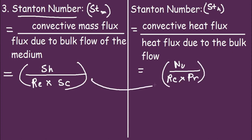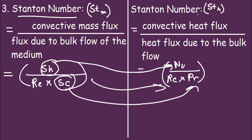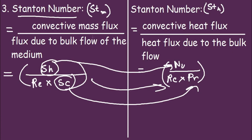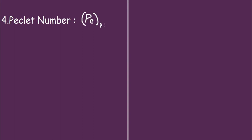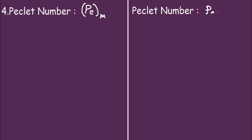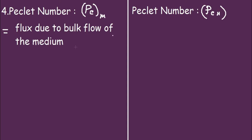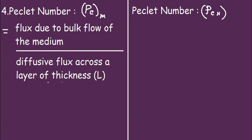If you remember one of these, deriving the other is easy: the analog to Sherwood number is Nusselt number, and the analog to Schmidt number is Prandtl number. The fourth group is the Peclet number. For mass transfer, denoted Pe_m, it equals flux due to bulk flow divided by diffusive flux across a layer of thickness L, which equals Reynolds number times Schmidt number.